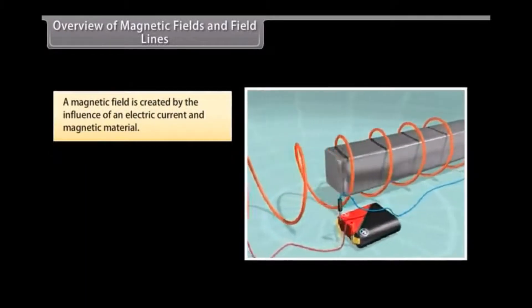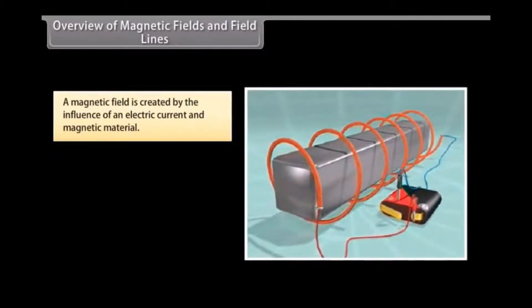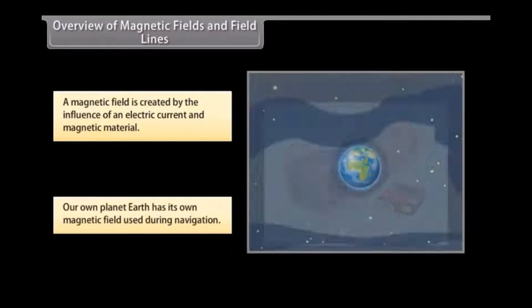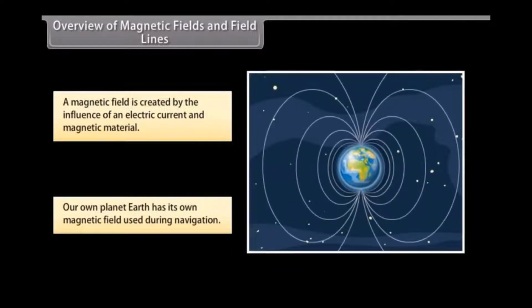Overview of magnetic fields and field lines. A magnetic field is created by the magnetic influence of an electric current and magnetic material. Our planet Earth produces its own magnetic field, which is an important factor during navigation.